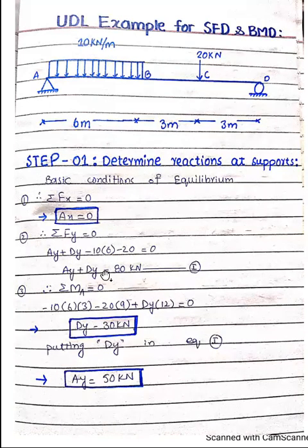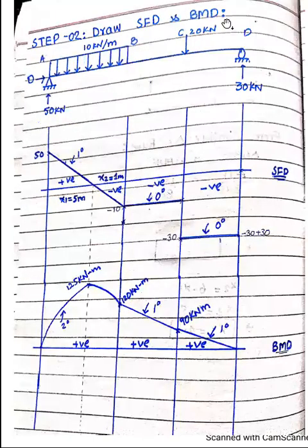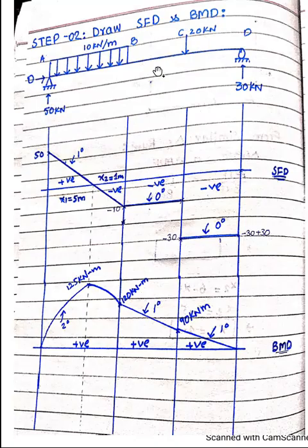Substituting Dy into equation one, we get Ay equals 50 kilonewton. Now moving towards step two — drawing the shear force and bending moment diagram. We show the reactions: 50 kilonewton upward at A and 30 kilonewton upward at D. We draw vertical planes below the spans A to B, B to C, and C to D — three spans in this example.